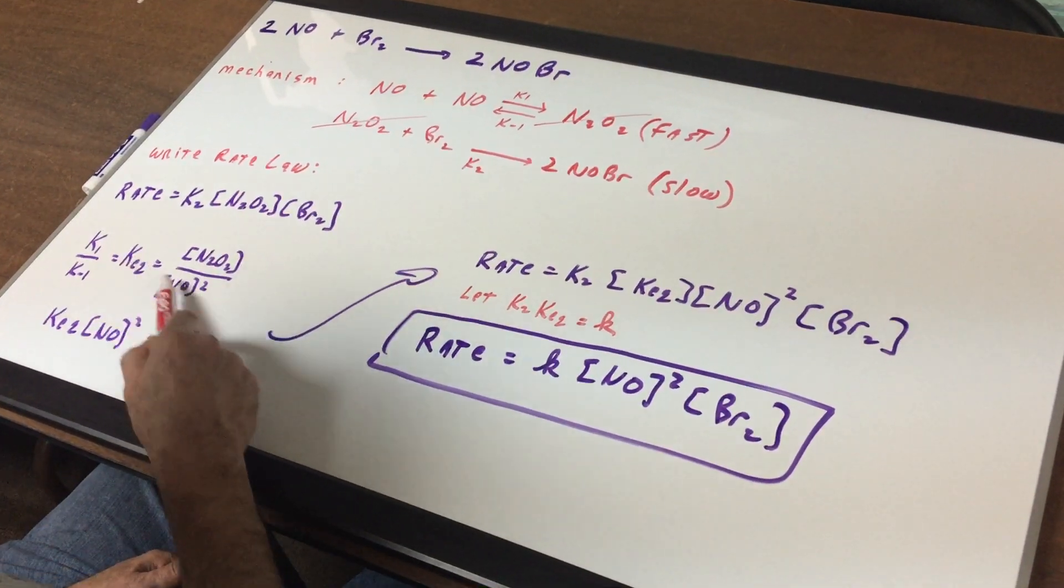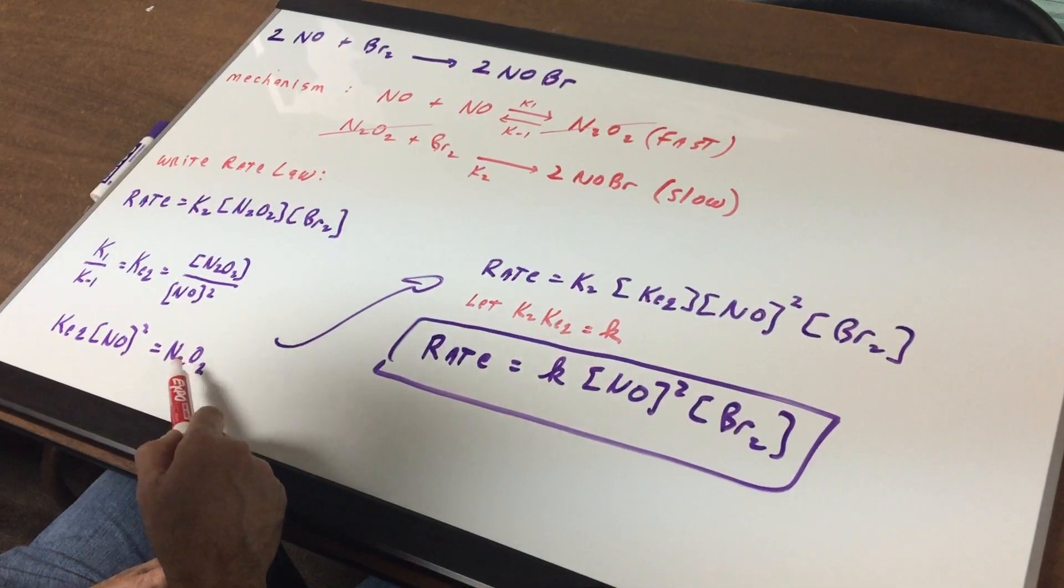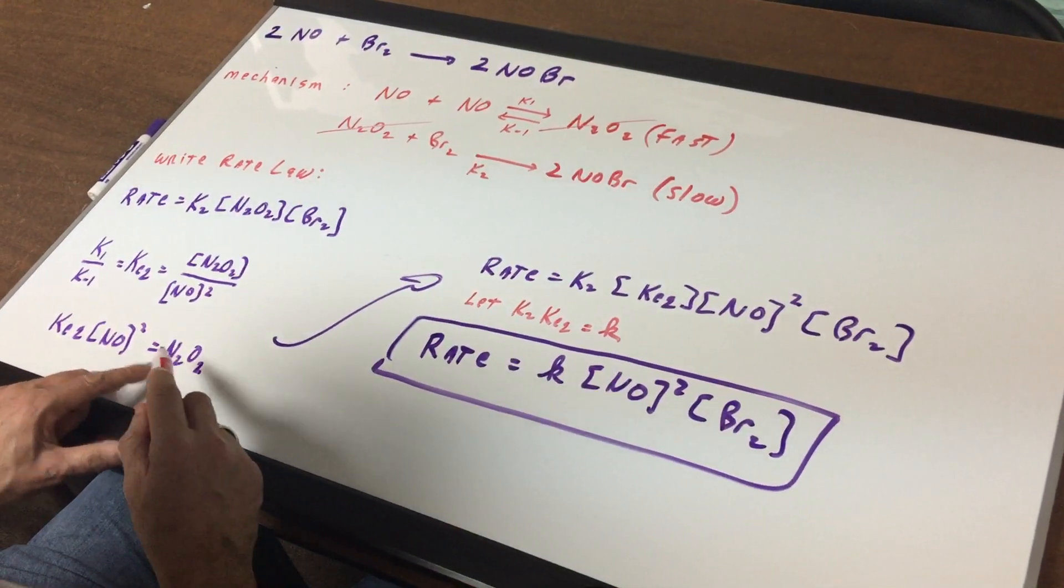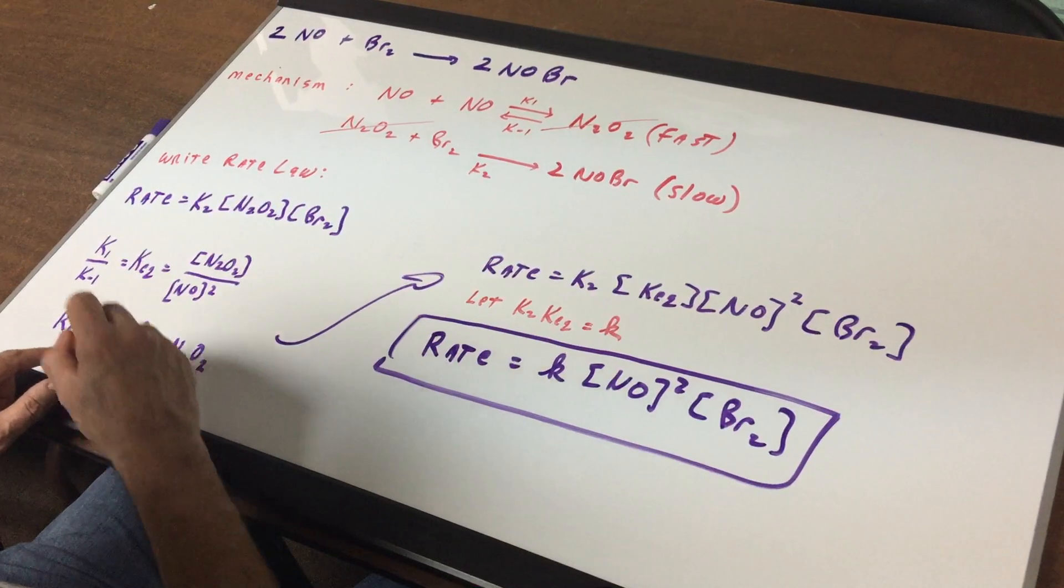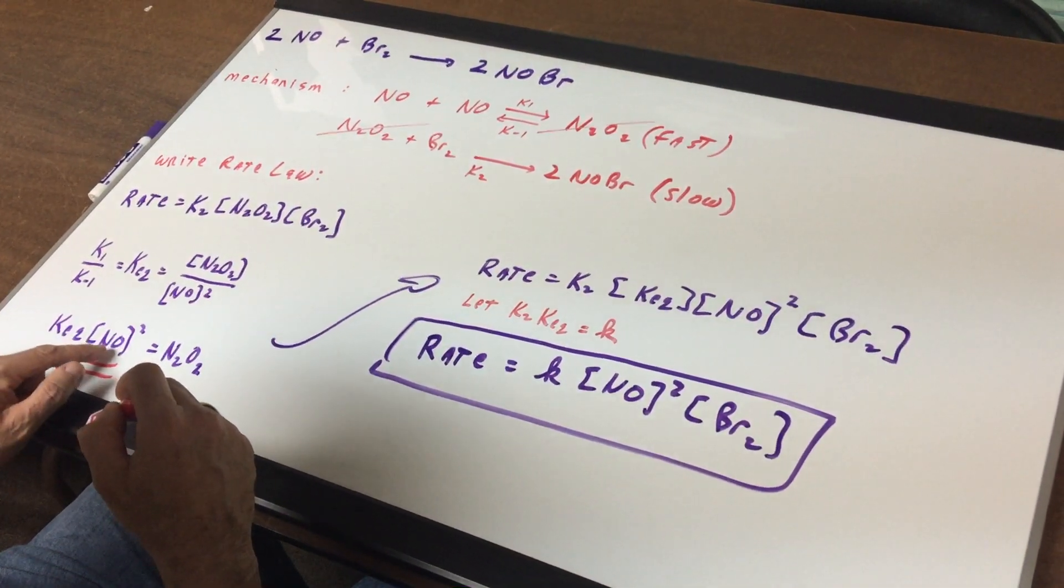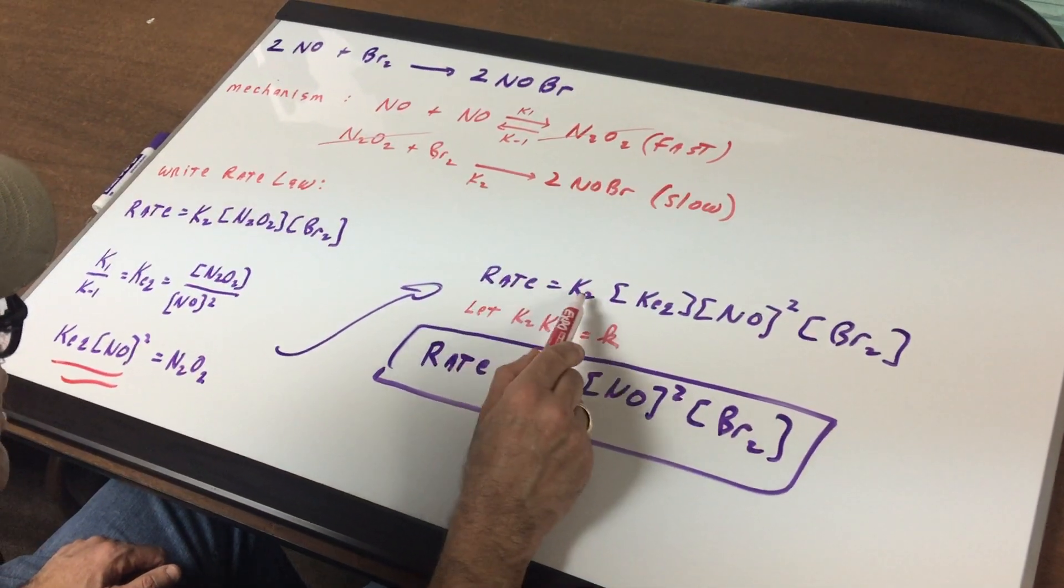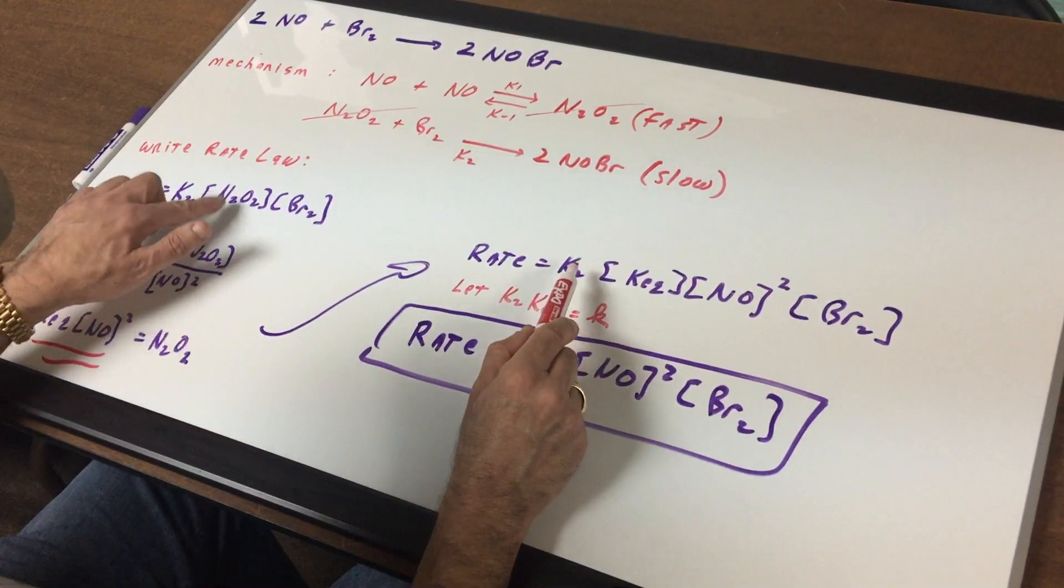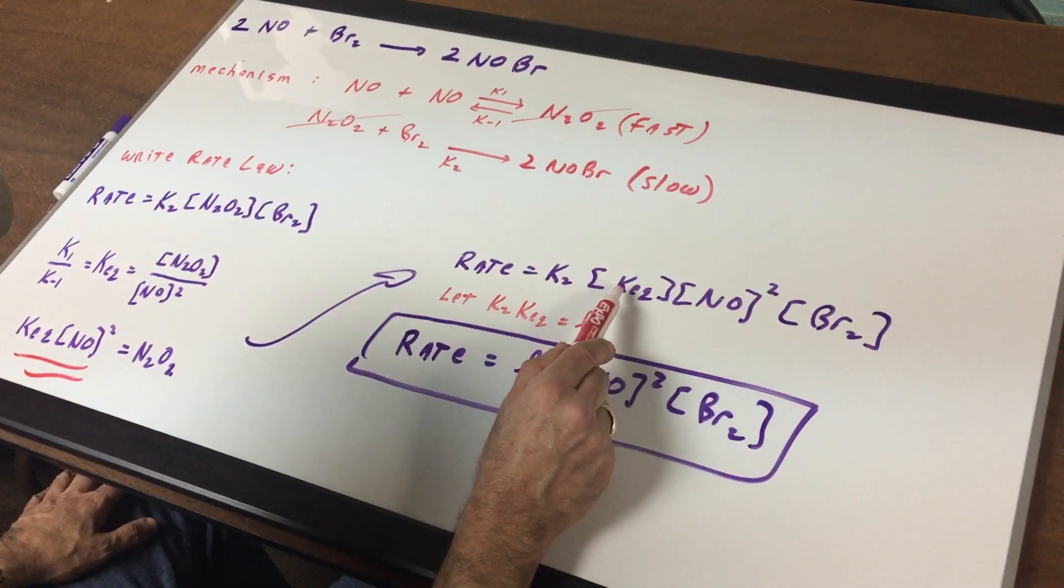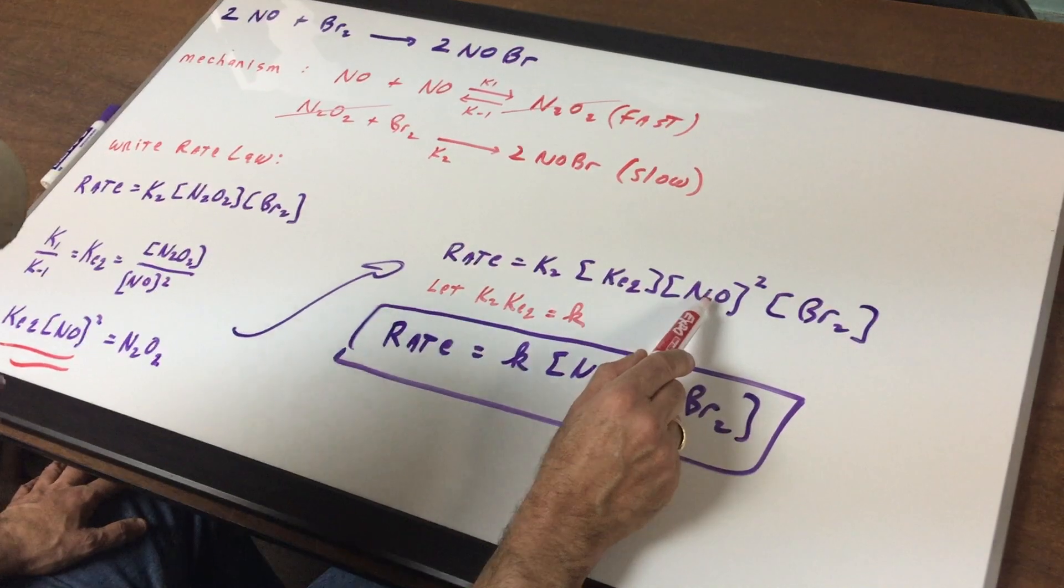If you cross-multiply, you get KEQ times NO squared is N2O2. So what I'm going to do is wherever I see N2O2, I'm going to substitute KEQ NO squared. So we go back to this equation and rate equals K2. And now I'm doing my substitution. As you can see, the N2O2 is KEQ times NO squared.